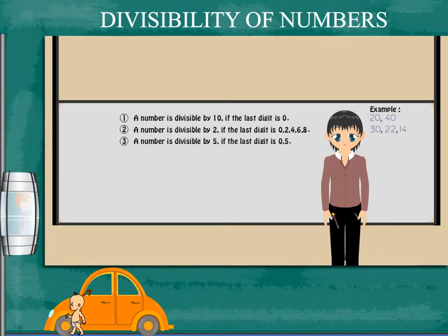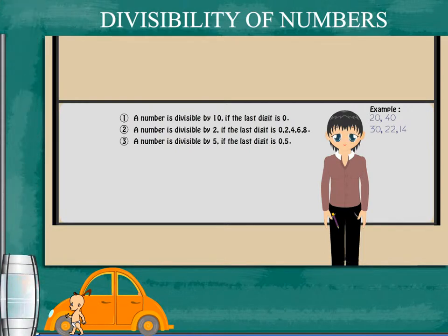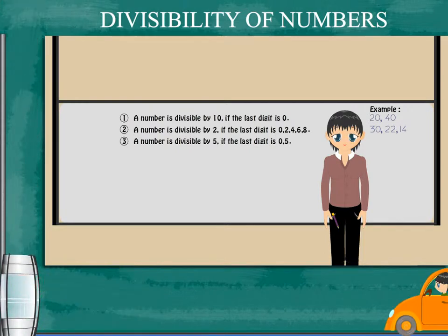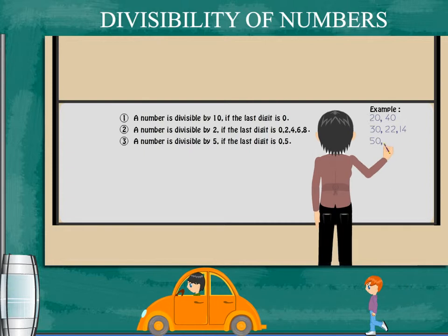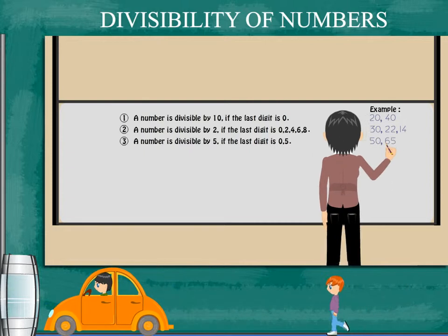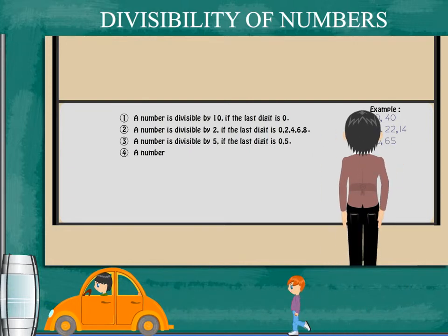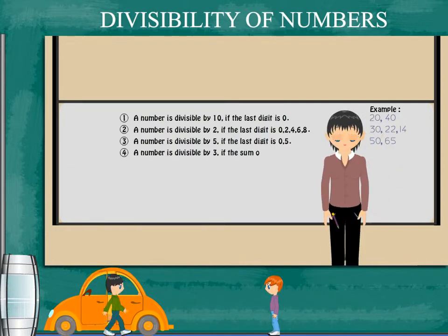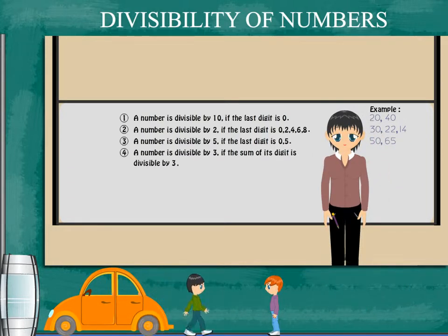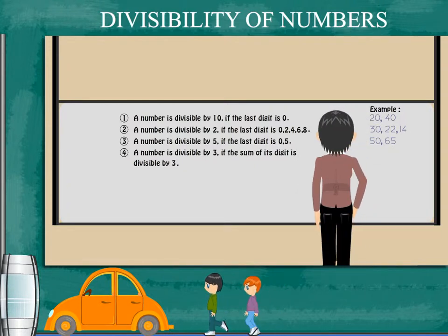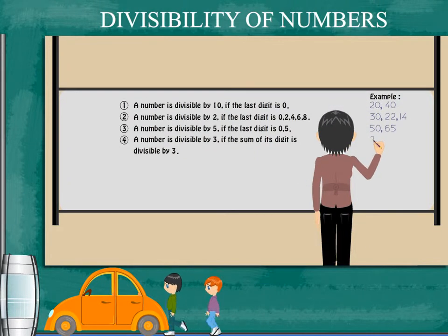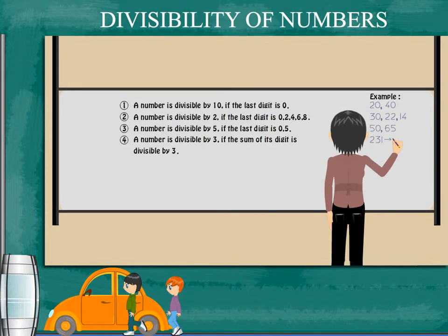A number is divisible by 5 if its last digit is either 0 or 5. For example, 50 and 65. A number is divisible by 3 if the sum of its digits is divisible by 3.